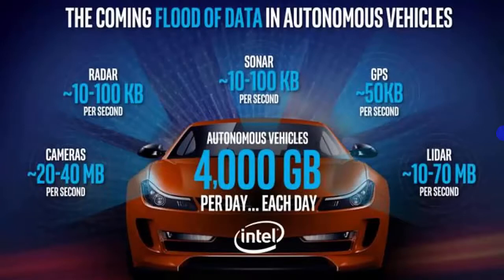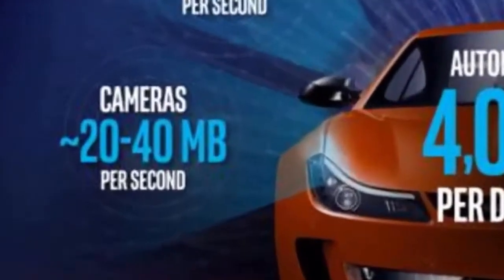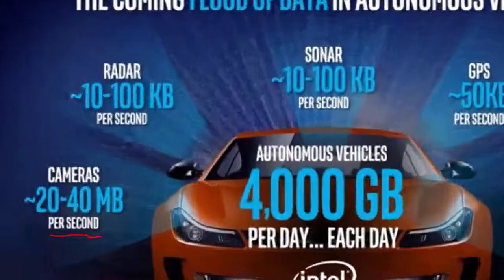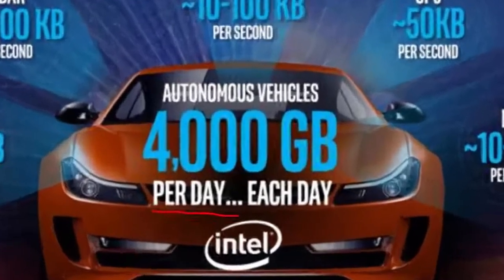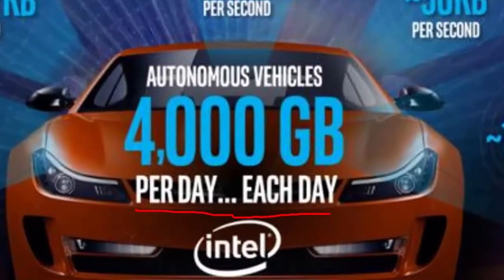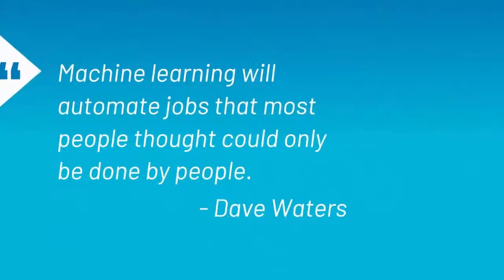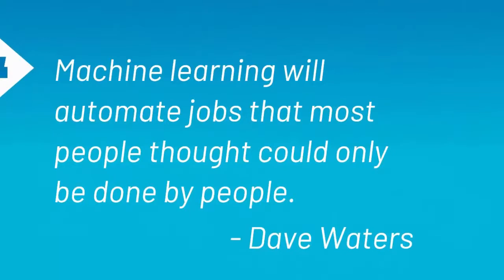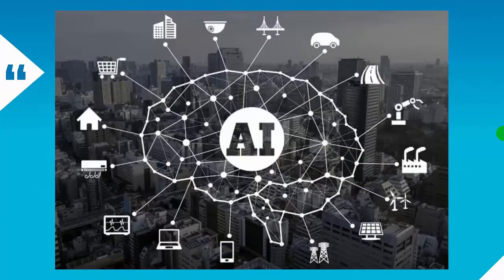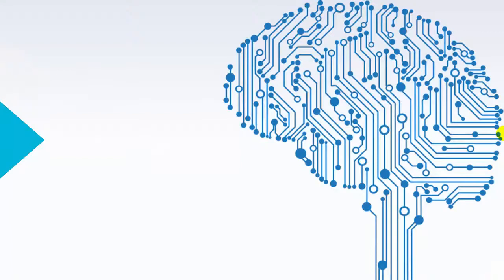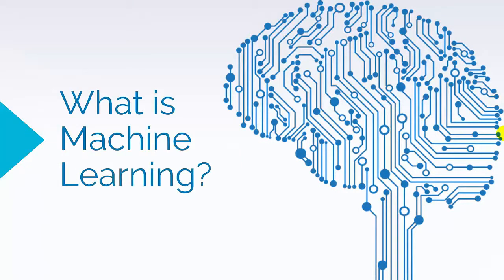Tons of data are collected every minute and processed in a data system that is 10 to 20 teraforce worth of storage per car per day. Cameras generate data at 20 to 40 MB per second, along with radar sensors and lidar — these are the different sensors. An autonomous vehicle generates data of around 4 GB each day. It was said that machine learning will automate jobs that most people thought could only be done by people — and today we see machine learning all around us in the products we use.